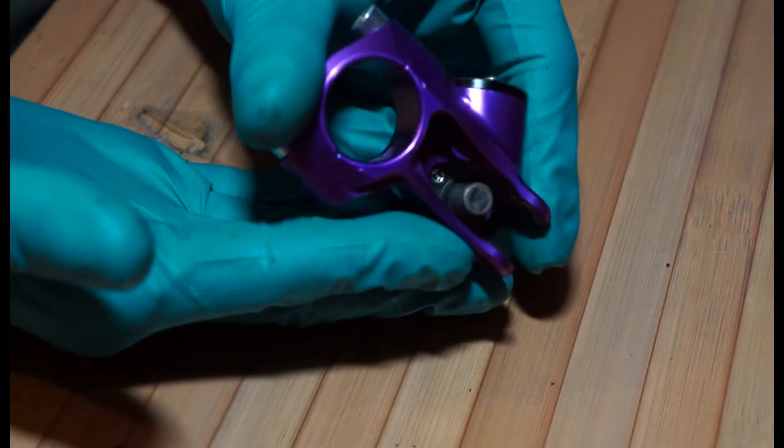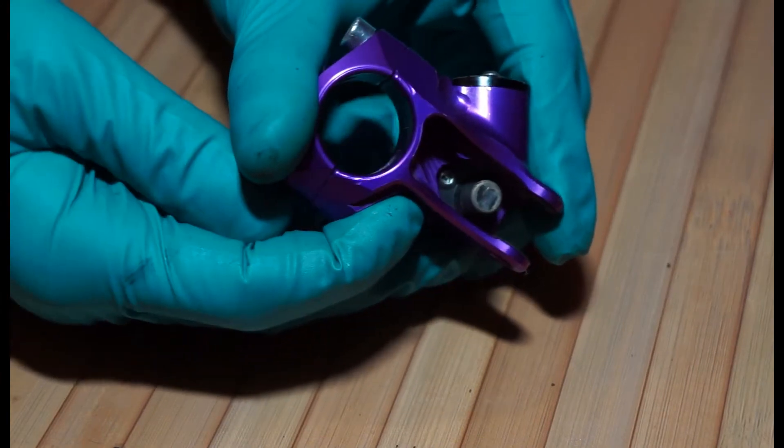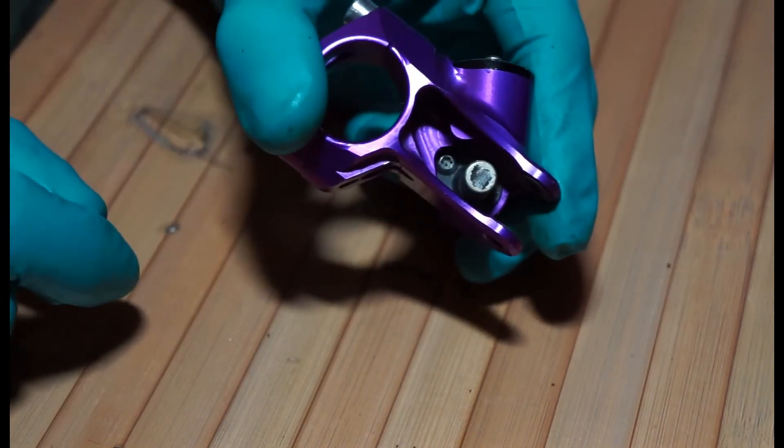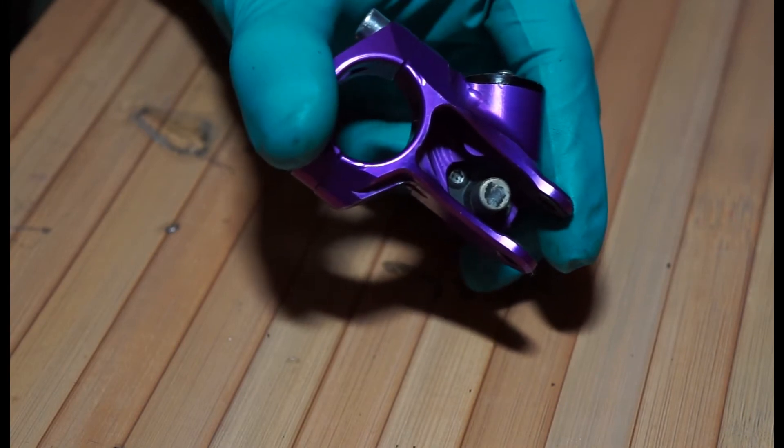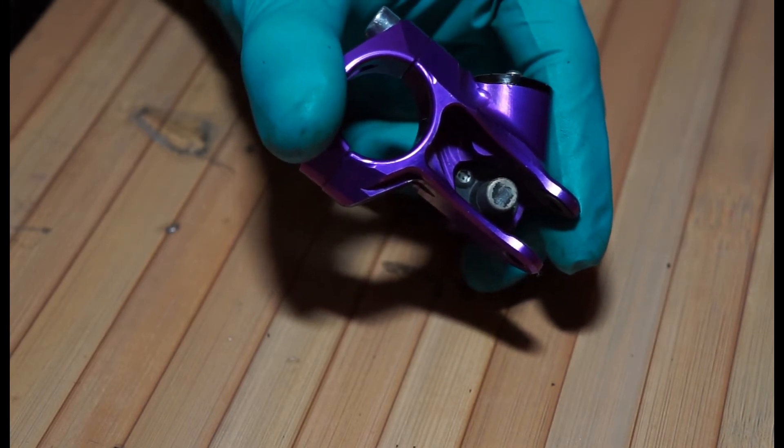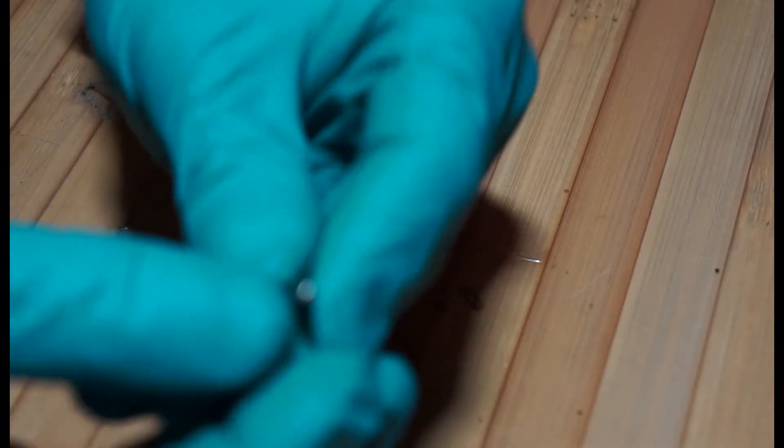You're left with this. You can see there's a little silver bolt there. For some reason, Hope put these kind of security bits on there. It's actually a T10 Torx, but it's got a hole in the middle.